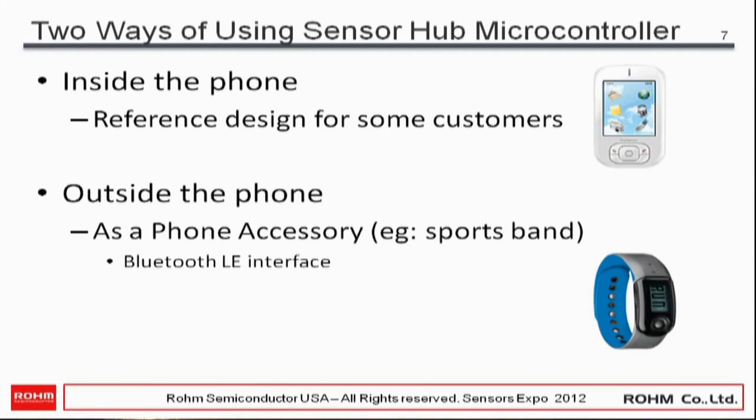There are two ways of using the SensorHub microcontroller. One is inside the phone, which would enable chipset vendors to provide reference designs to customers, or allow phone customers to offer a special model. The other way is to use the SensorHub outside as a sports band worn on the arm that talks to the phone — a sports accessory. A Bluetooth LE interface would be required in that case.